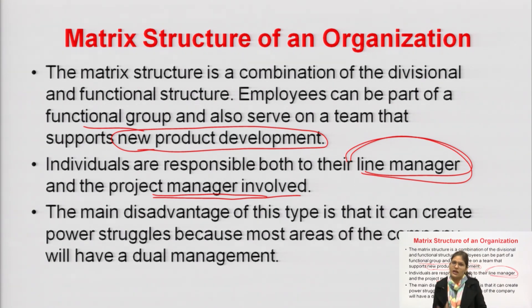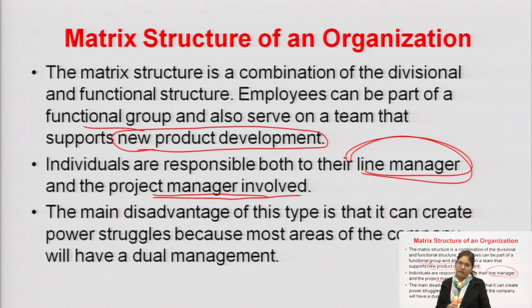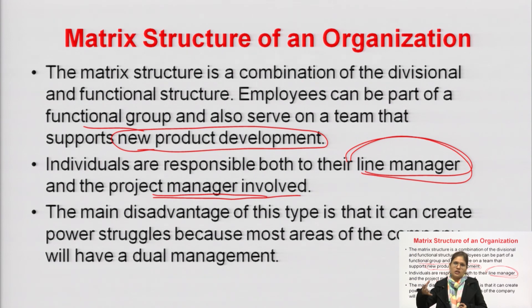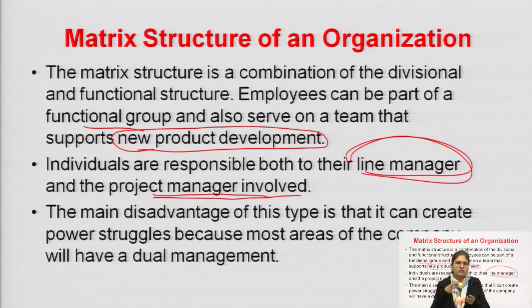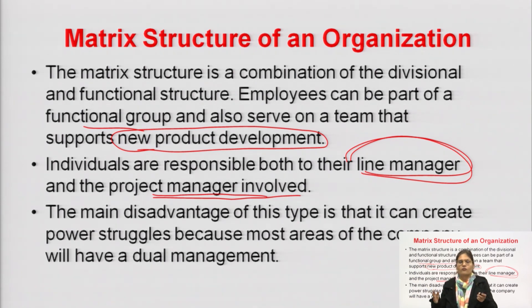Matrix is a complex, temporary type of structure. It is the combination of both functional and divisional, created when there is a new project where both divisional people and functional people have to work together, and employees will have two bosses at one particular time period. Matrix structure is temporary because it is made only until the project is finished; once the project finishes, the matrix structure is converted back into functional and divisional.